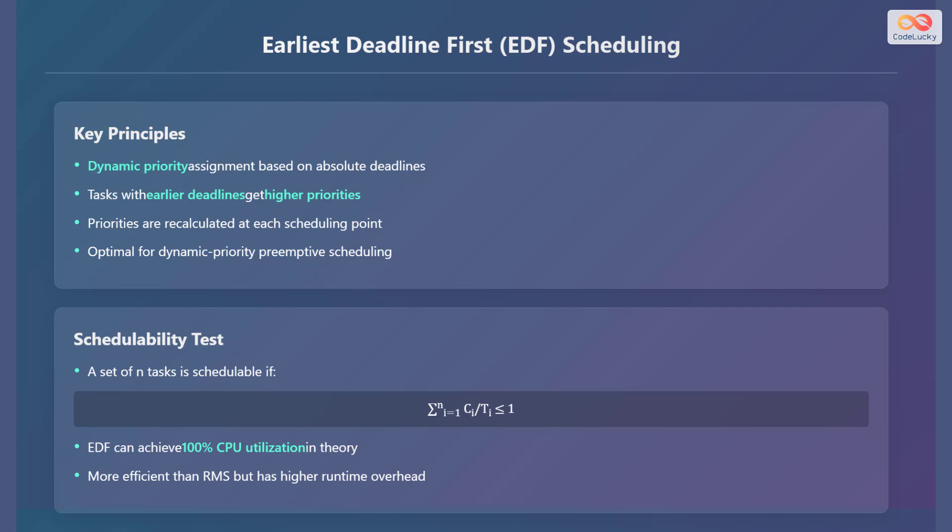Note that EDF can achieve 100% CPU utilization in theory. Although it's more efficient than RMS, it has a higher runtime overhead.